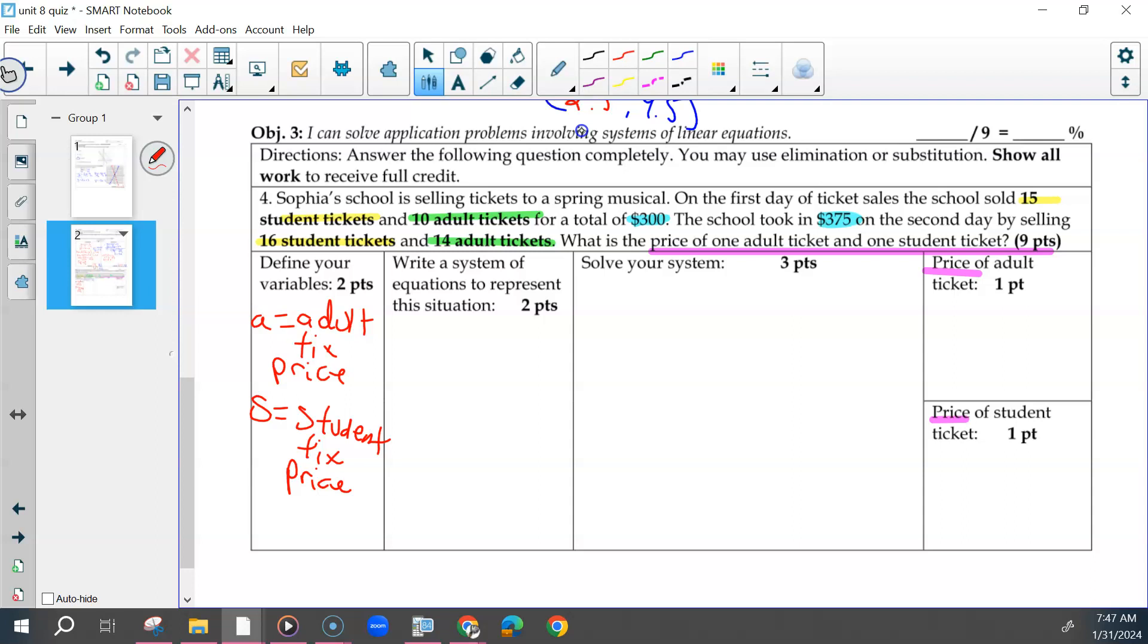And then defining both for a point apiece. Your two equations, you had six numbers, so you should have used all six. 15S plus 10A equals 300. Some of us are putting our variables before the coefficient, but we need to stop that. Put the coefficient first, then the variable. 16S plus 14A equals 375.